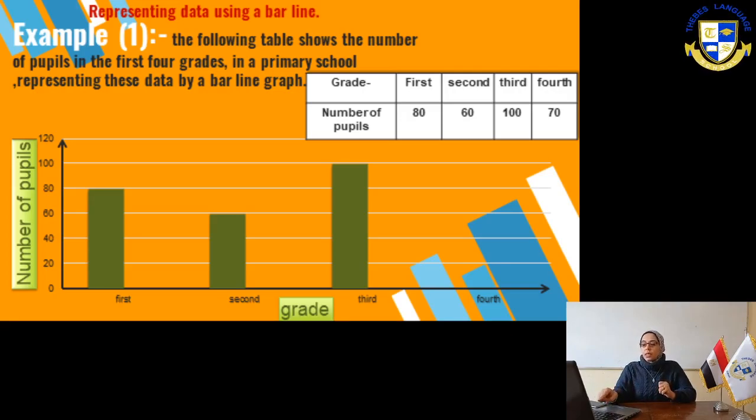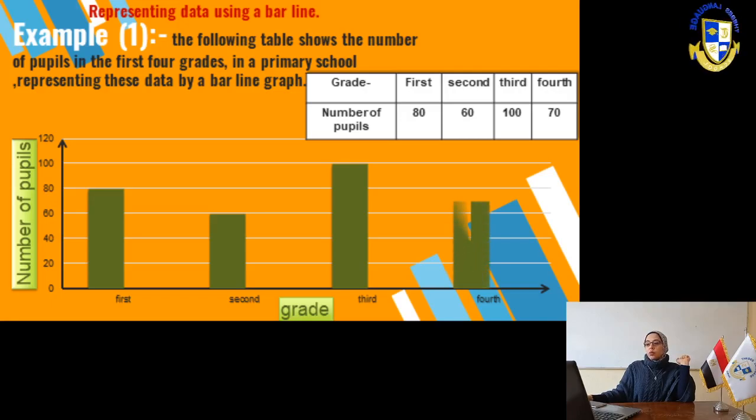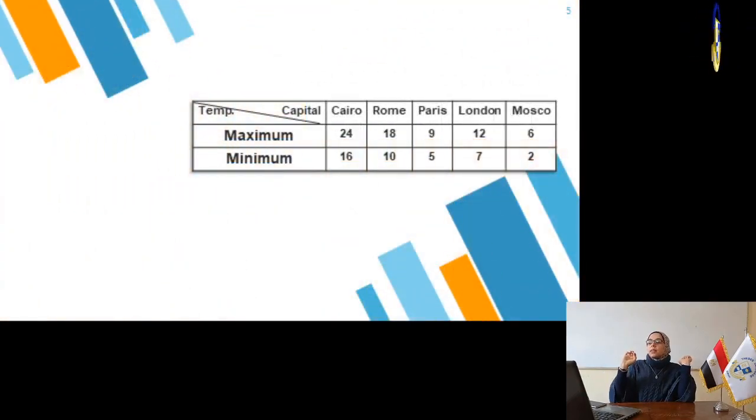The first is 80. We will draw the bar till number 80. Second, 60. Draw the bar till number 60. Third, 100. Draw the bar till number 100. Fourth grade for 70, so we'll draw the bar for 70. But here, we haven't 70. Where is the 70? 70 is between 60 and 80, so we draw it in the middle between 60 and 80.